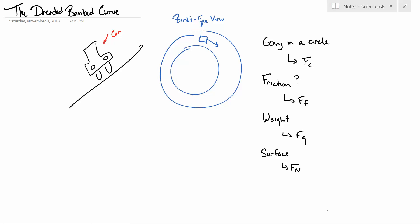Alright, let us talk about the dreaded banked curve. The idea here is that we have a car going around a circle like this, but the path it's on is tilted at some angle,